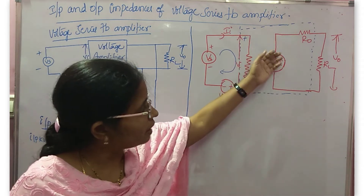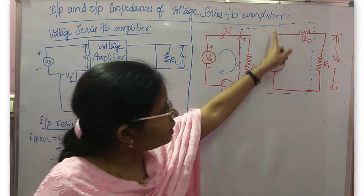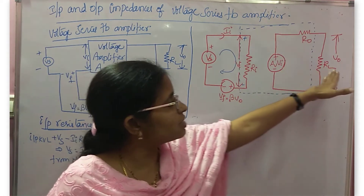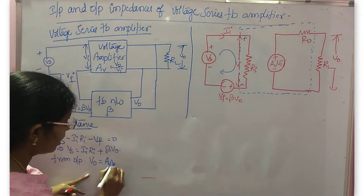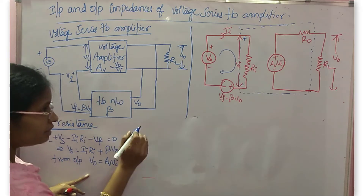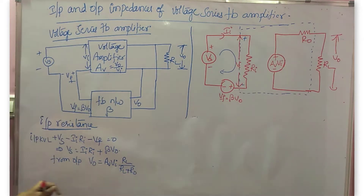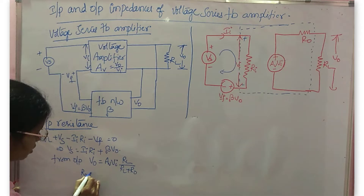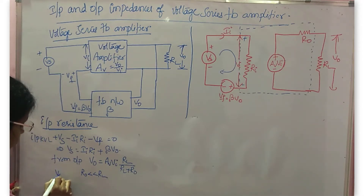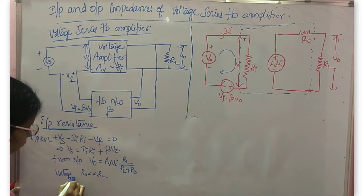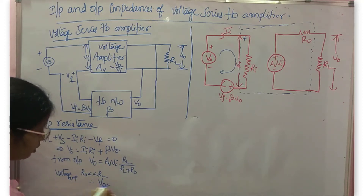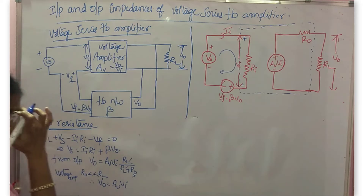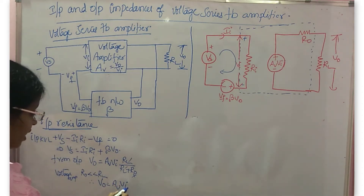If you see the output circuit, it consists of a dependent voltage source. This gets divided into two parts because it is connected with two resistors, so there exists a voltage division concept. The voltage across RL is: total voltage Av·Vi times RL divided by total resistance (RL + R0). For a voltage amplifier, R0 is far less than RL, so you can neglect R0 and cancel it. Therefore V0 equals Av·Vi.